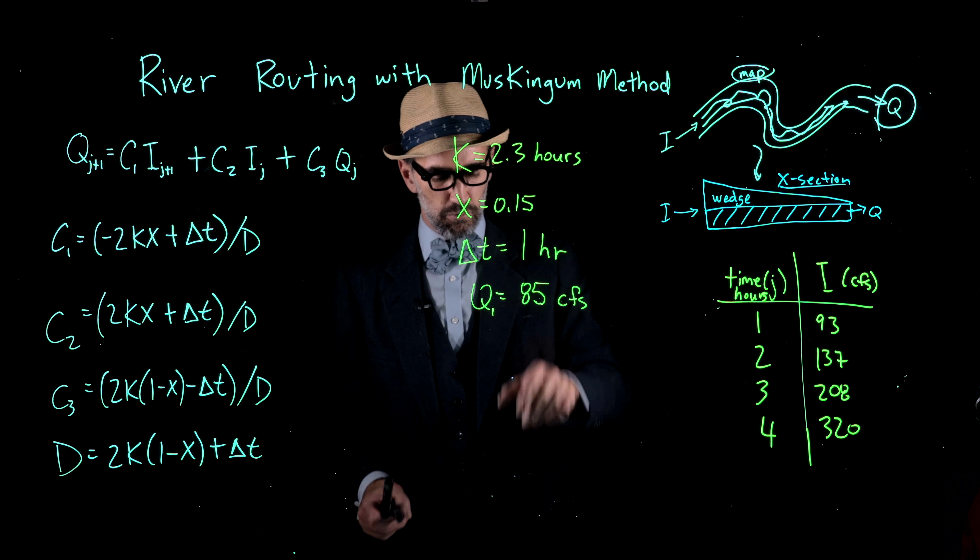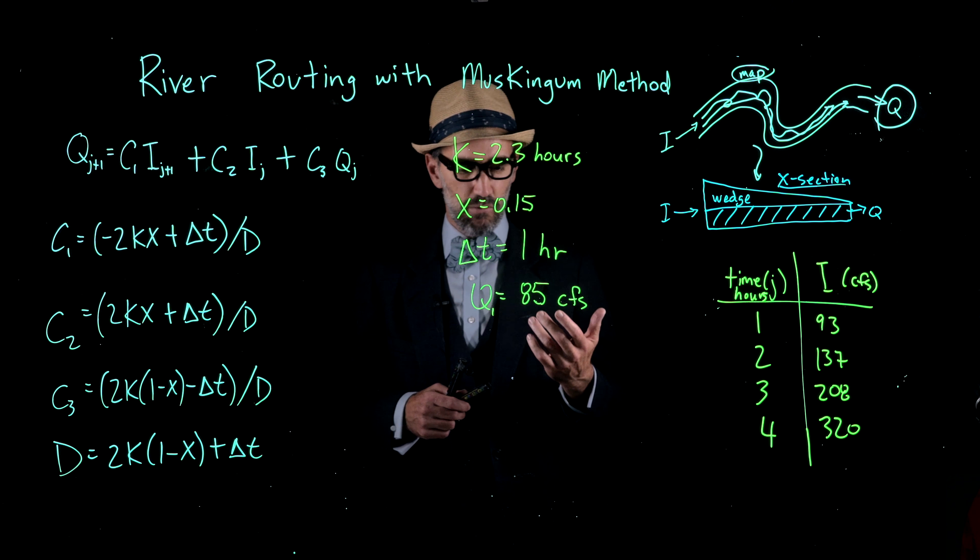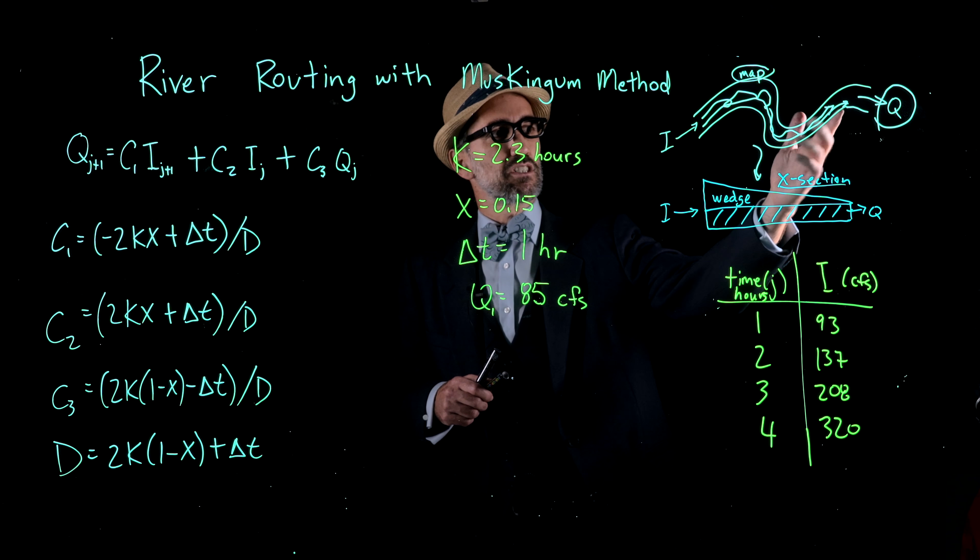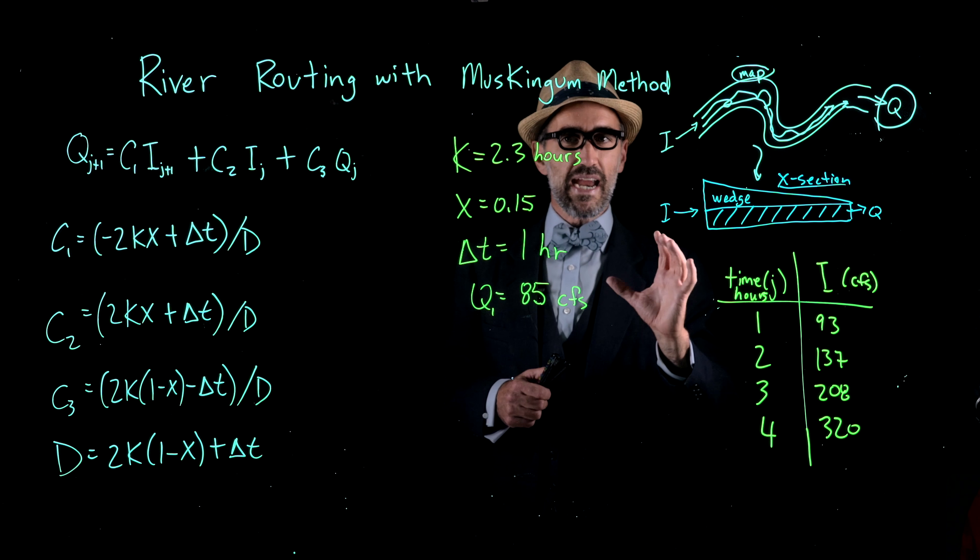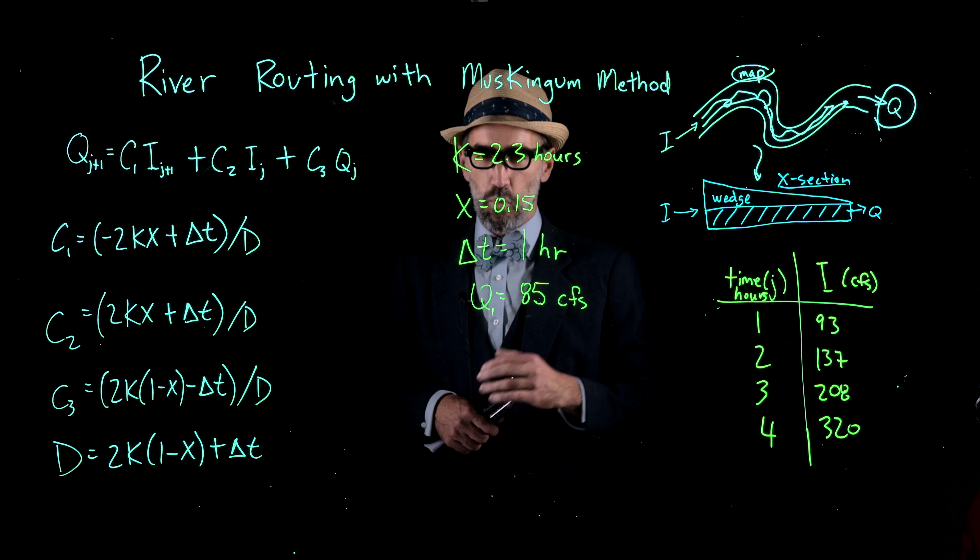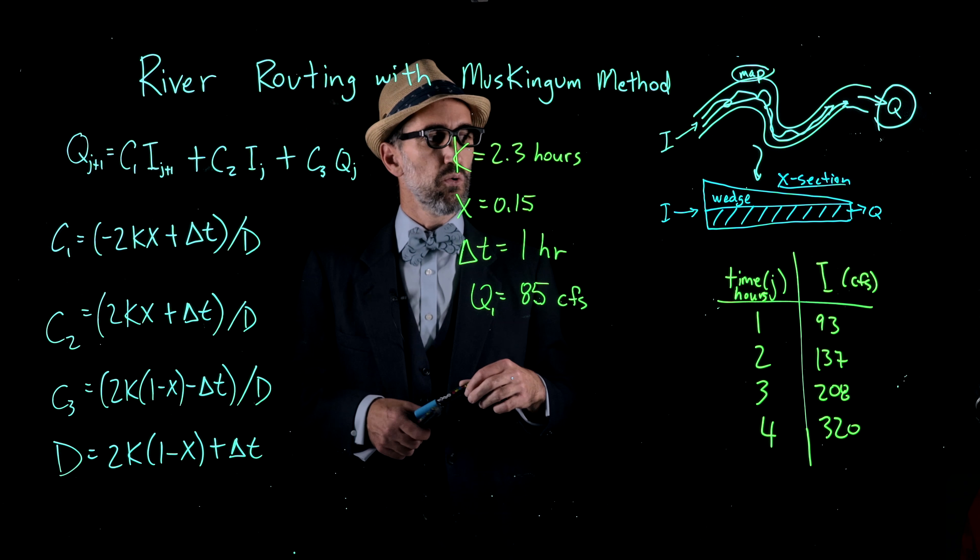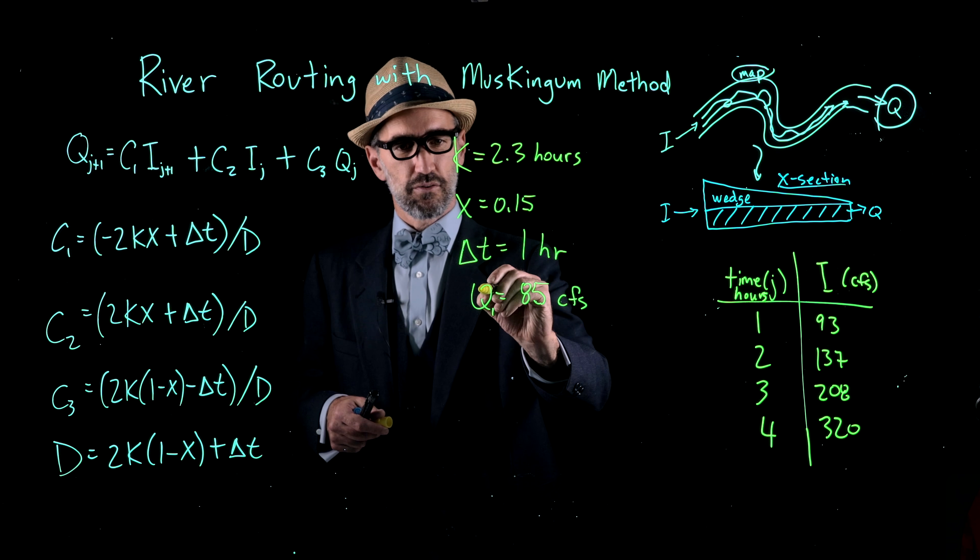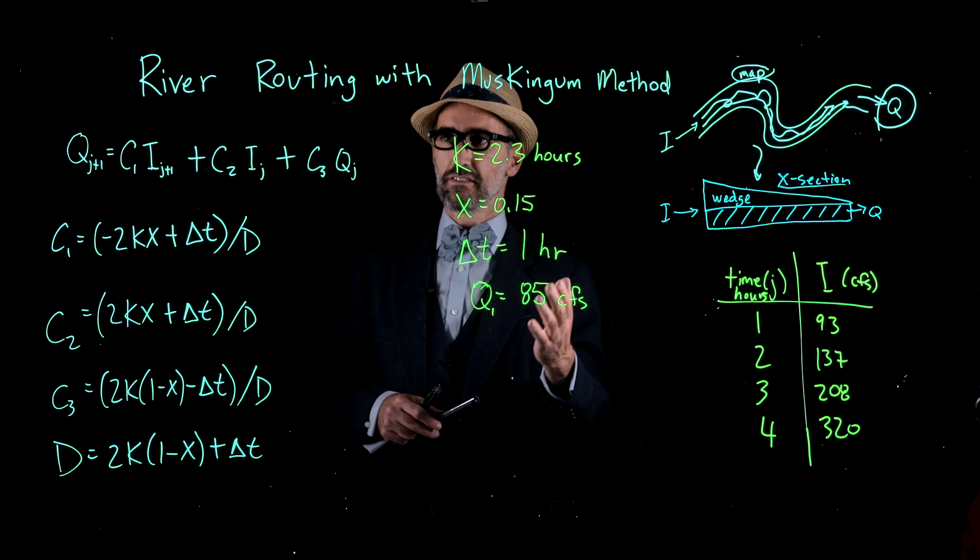We also know some characteristics of the stream. The first is this big K, which is not hydraulic conductivity. It's a coefficient that approximates the travel time in the river. This X here is a weighting factor which shows for this stream the importance of this wedge storage. We have a time step of 1 hour and a Q1, our initial stream flow output of 85 CFS.